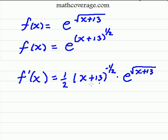And we do want to simplify this a little bit. So we have e all raised to the square root of x plus 13, and because now this is a negative one-half, we can take this down into the bottom.